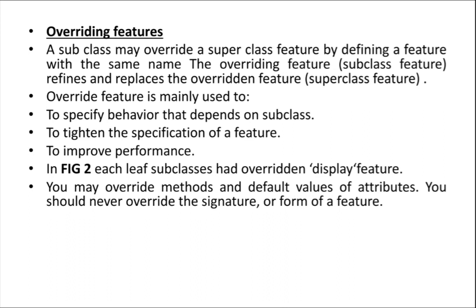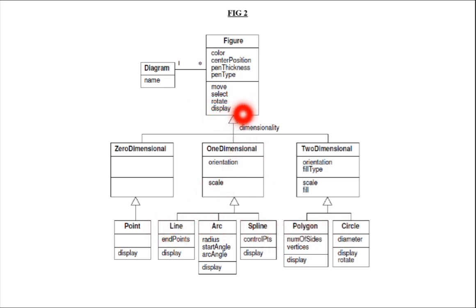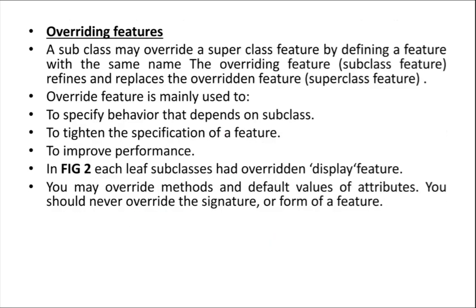A subclass may override a superclass feature by defining a feature with the same name. For example, display — all these subclasses can override the display of the superclass figure. If you use the same name in the superclass and also in the subclass, the feature can be overridden. This display of the superclass can be overridden by the subclasses.